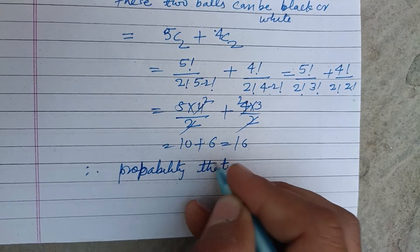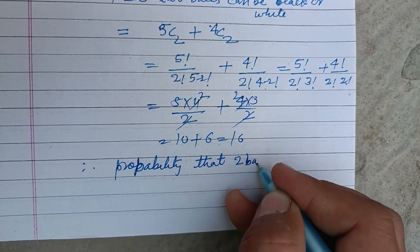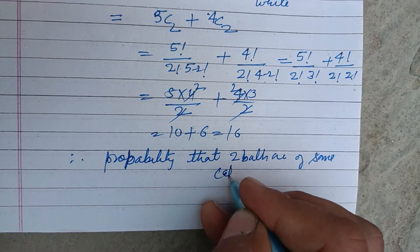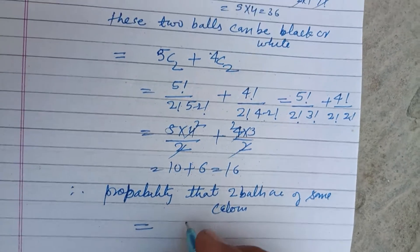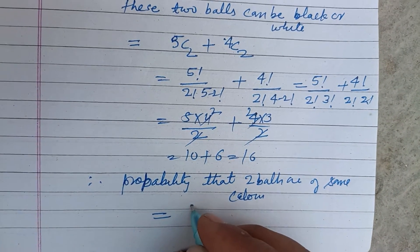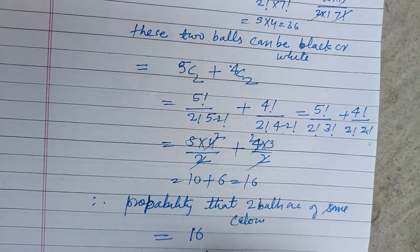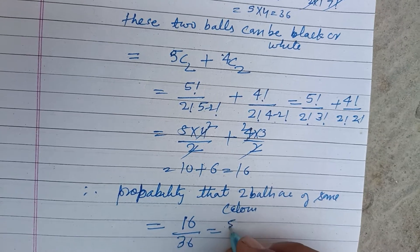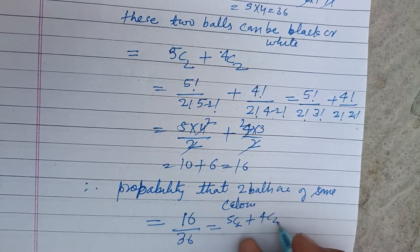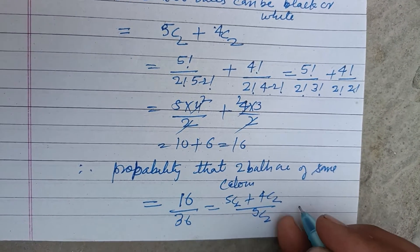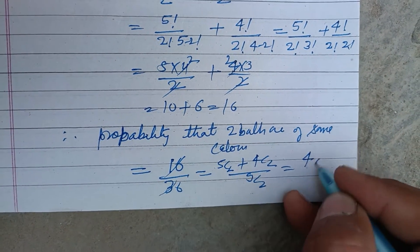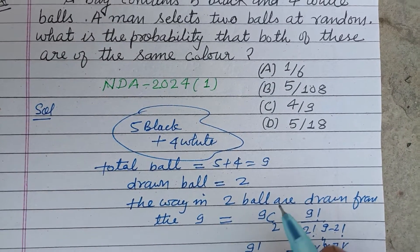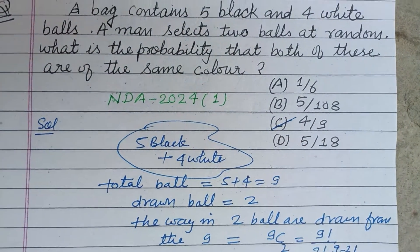Probability that two balls are of same color equals 16 upon 36, or we write it as 5C2 plus 4C2 over 9C2. And that is 4 into 4 is 16, and 4 into 9 is 36, so 4 upon 9 is the correct answer of this question, which is found in option C. Therefore, option C is correct.